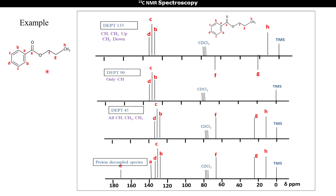In this second example, there are different sets of carbon atoms: A, B, C, D, E, F, G, and H. We need to identify the signal of CH, CH3, and CH2 carbons. In the proton-decoupled spectrum, signals of all carbon atoms are seen. In DEPT 45, signals of all CH, CH2, and CH3 carbon atoms are seen — that is, all carbon atoms except carbon E, which is the quaternary carbon and is absent.